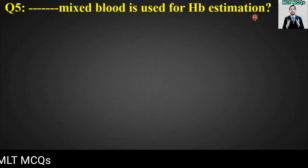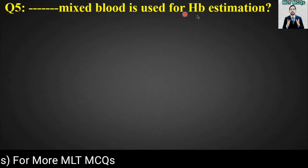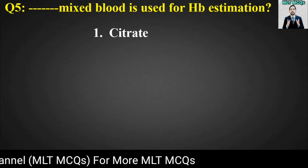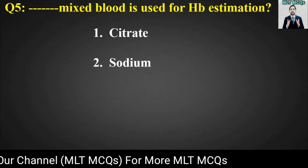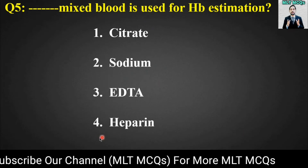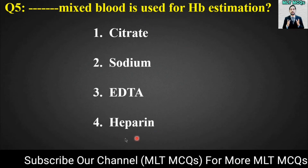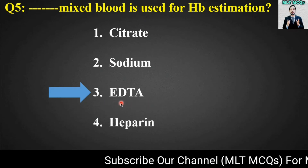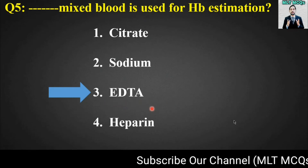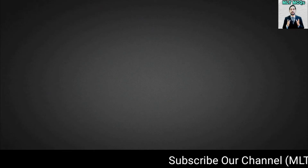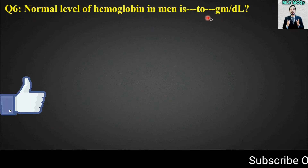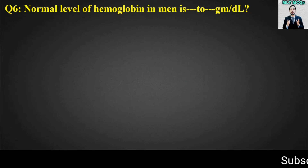MCQ number five: Which mixed blood is used for Hb estimation? Options are: citrate, sodium, EDTA, or heparin. The right answer is option number three — EDTA mixed blood is used for Hb estimation.